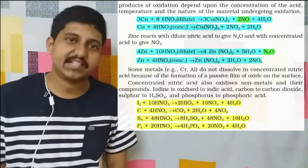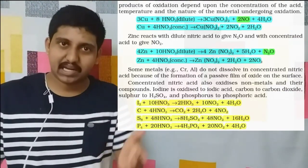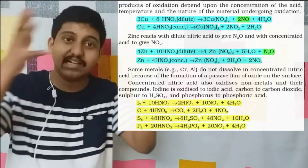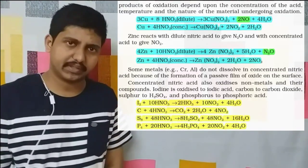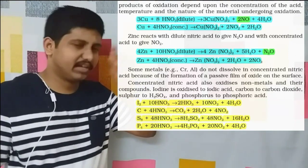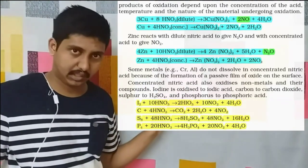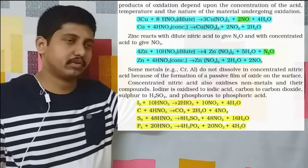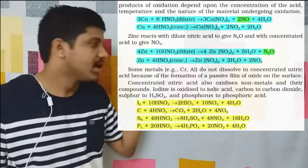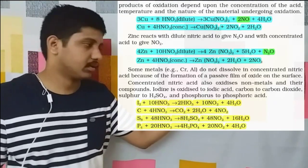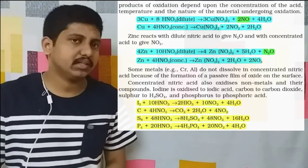How to remember it without confusion? It's very easy. I have a mnemonic for you: remember it as CUNO — CU for copper, NO for nitric oxide. So copper always gives NO with dilute HNO3. And with zinc, the exception is N2O. So CUNO helps you never confuse the products.